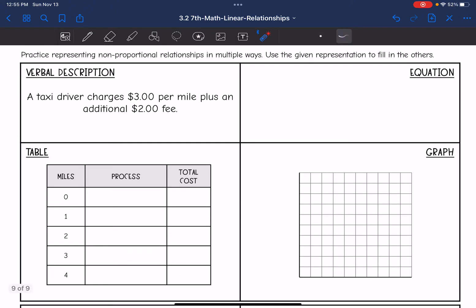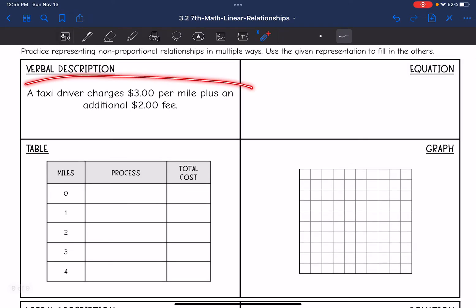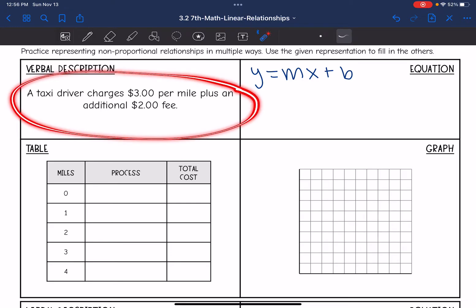So this first one, they gave us a verbal description. It says a taxi driver charges $3 per mile plus an additional $2 fee. So our equation is written in y equals mx plus b form, where m is the rate of change and b is the y-intercept, that initial value.